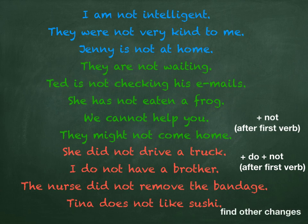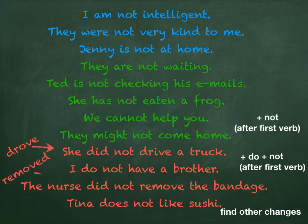Now, we need to check some other changes that happen in these simple sentences. The first example — she drove a truck — changes to she did not drive a truck. Be careful not to make it a double past tense. Also, remove changes to remove — drop the 'to'. And in the last case, Tina likes sushi: be careful to remove the S. Tina doesn't like sushi.